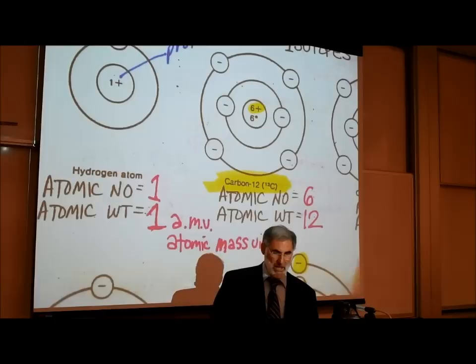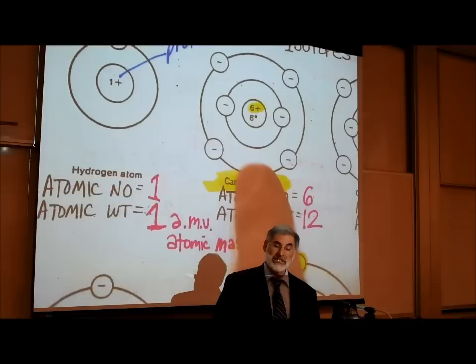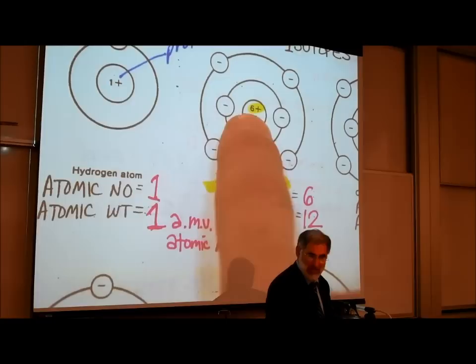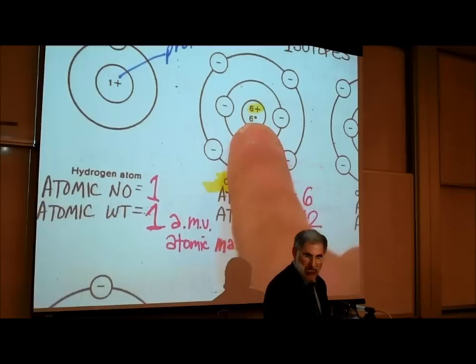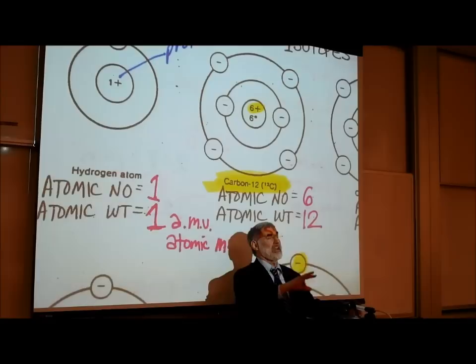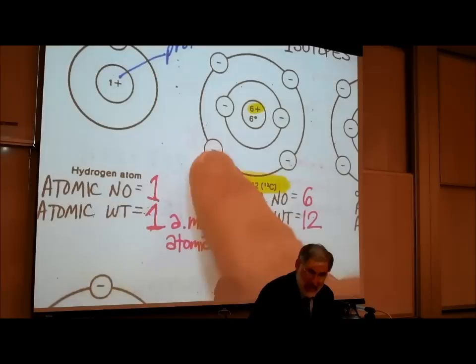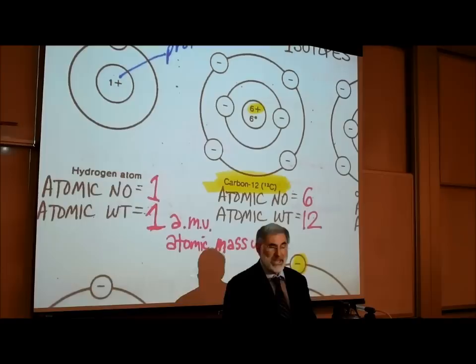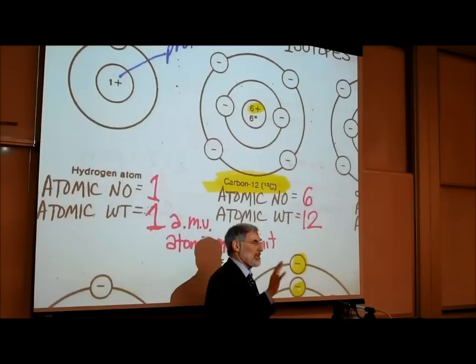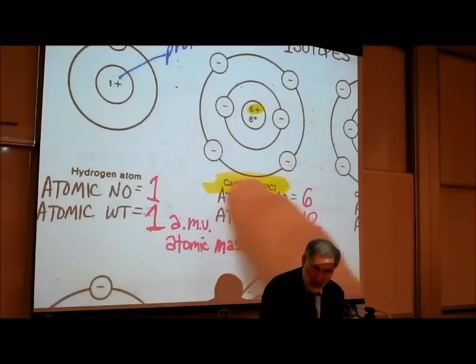This carbon atom, like all atoms, starts out with the same number of negative charged electrons as positive charged protons. Since it has six positive charged protons, it must have six negative charged electrons orbiting around the nucleus. The first orbit has two electrons — the first orbit can hold up to two. The second orbit has four electrons, giving us a total of six. The second and all subsequent orbits can hold up to eight electrons.